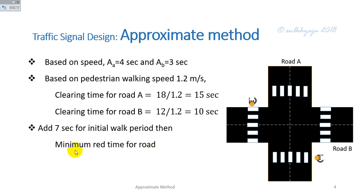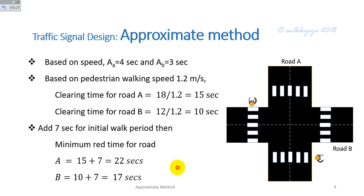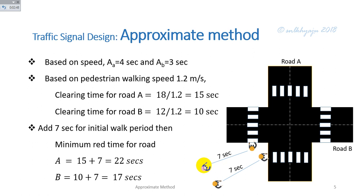The minimum green time for traffic on Road A will be 15 plus 7 equals 22 seconds, and for Road B it is 10 plus 7 equals 17 seconds. The 7-second initial period accounts for pedestrians who are still on the road when the signal changes — pedestrians within 7 seconds of the edge should have cleared the road. This is considered the initial walk period in pedestrian traffic signal design.